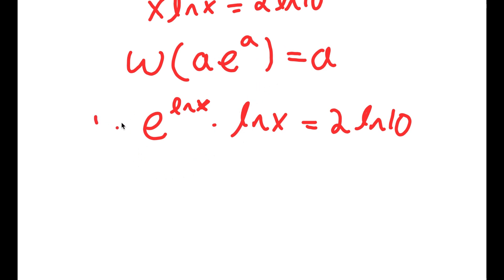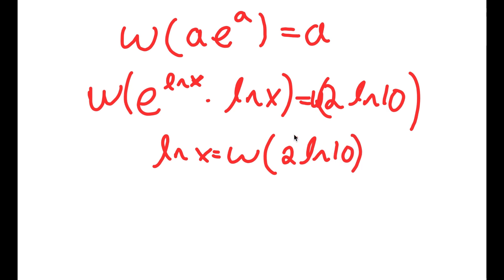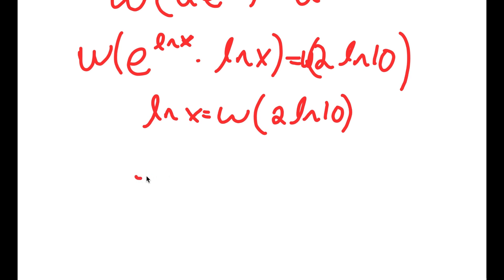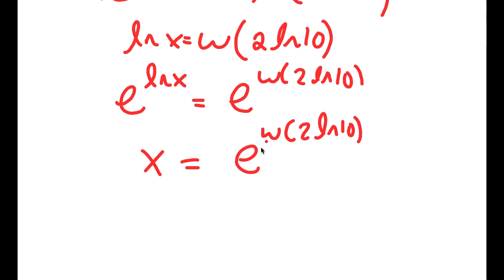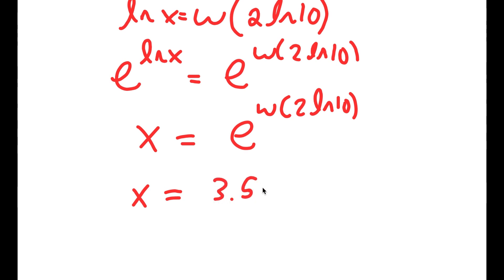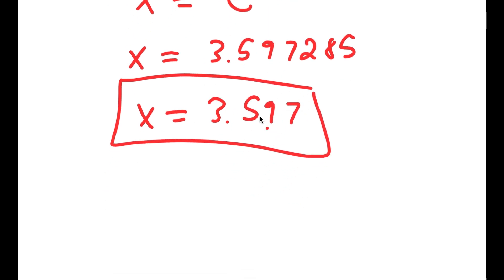Taking the Lambert W function on both sides, this results in ln x equaling W of 2 times ln 10. Taking e to the power of both sides: e to the power of ln x equals e to the power of W of 2 ln 10. Since e to the power of ln x equals x, I get x is equal to e to the power of W of 2 times ln 10, which equals approximately 3.597.